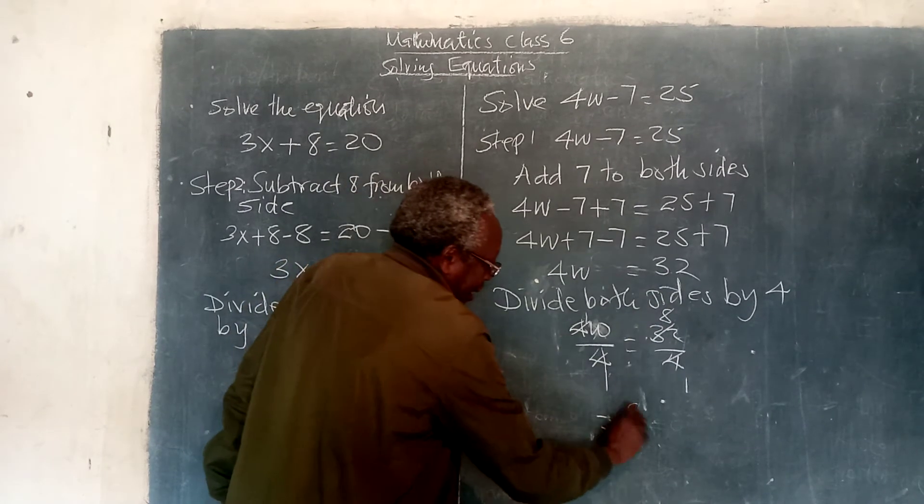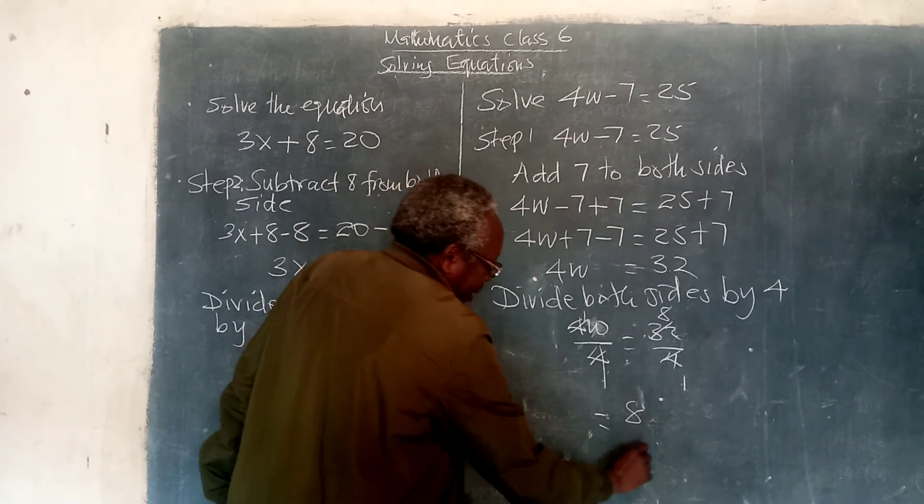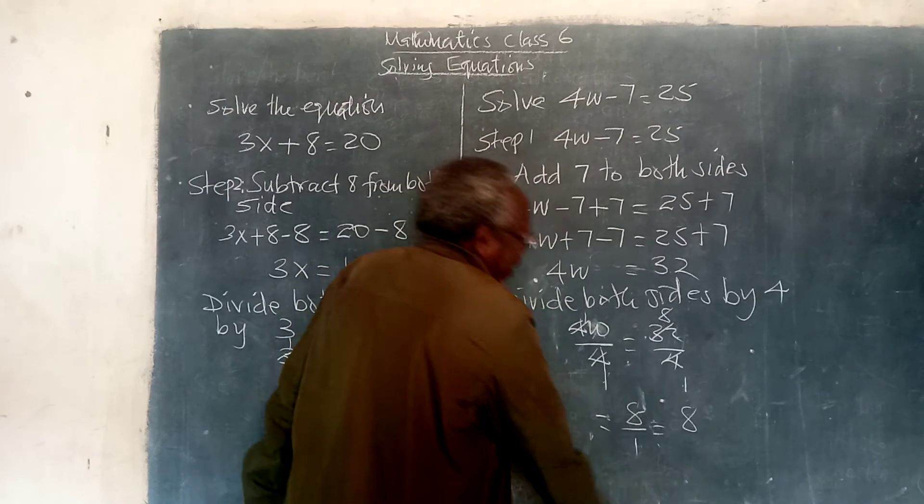So, we have 1 times 8 is 8, and 1 times 1 is 1, therefore, the answer is 8.